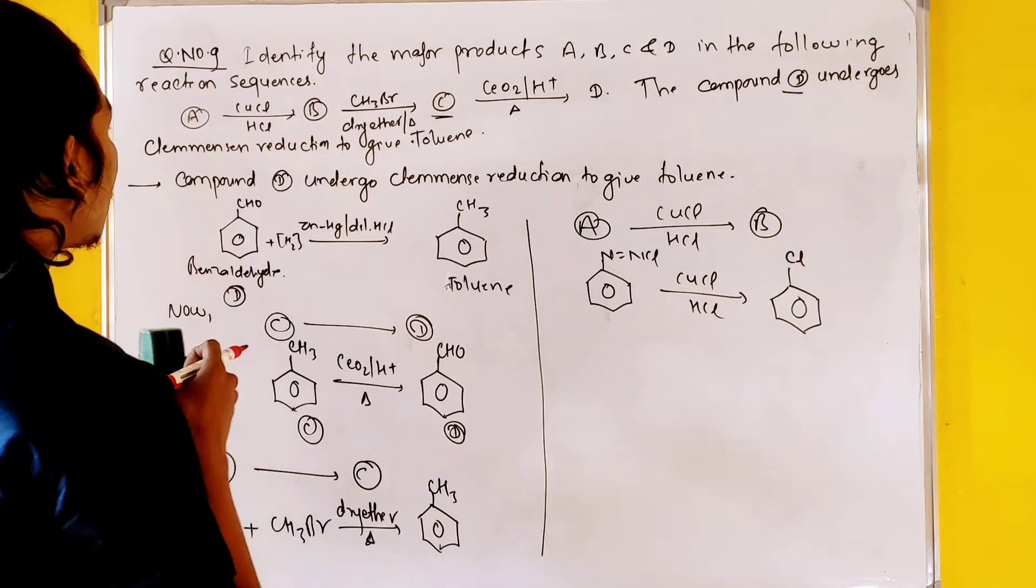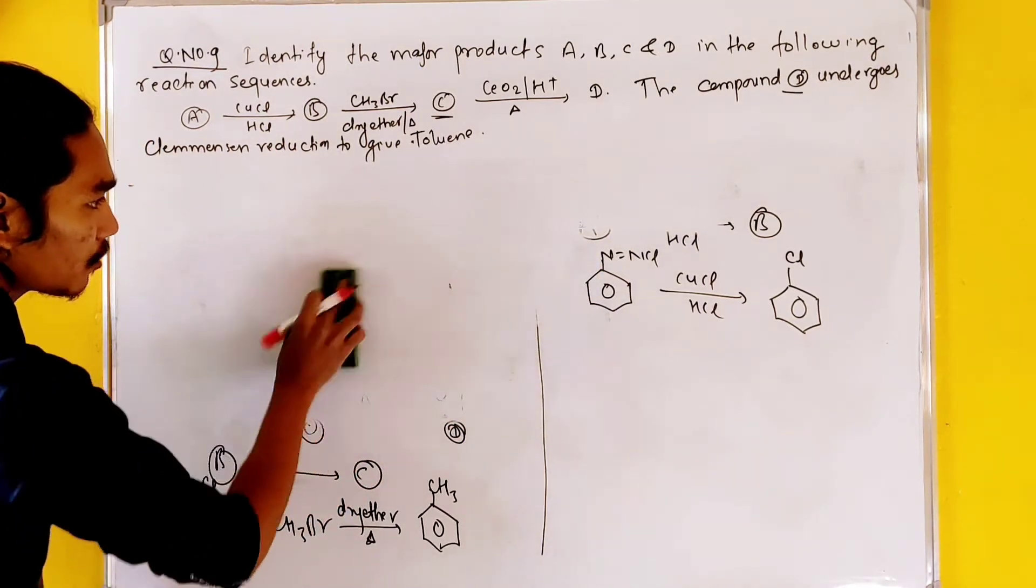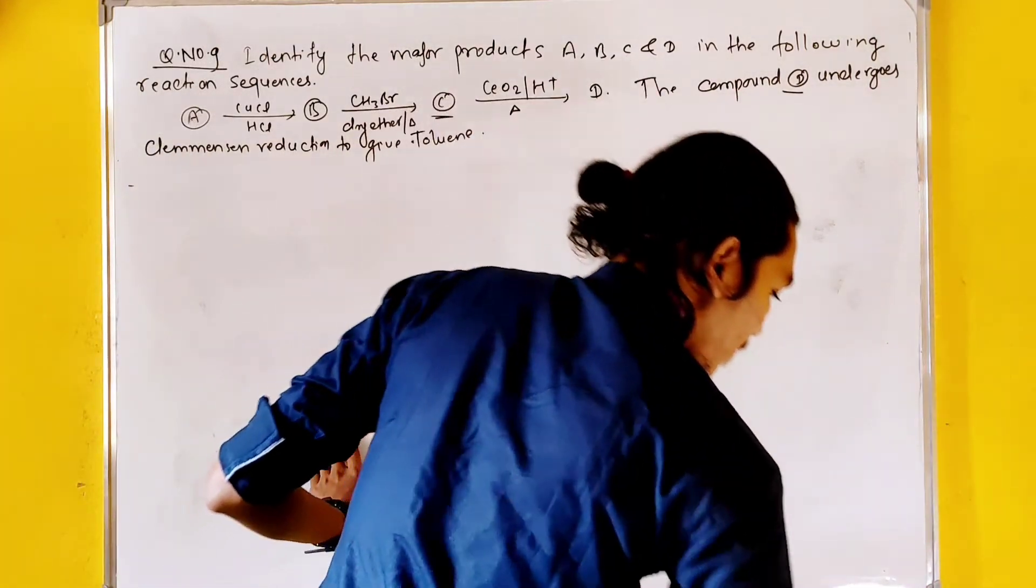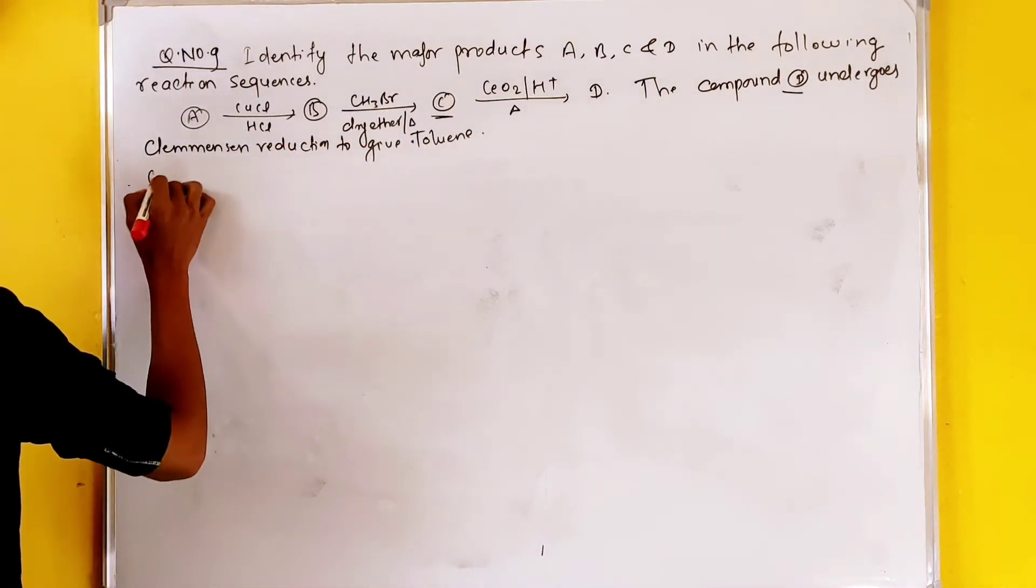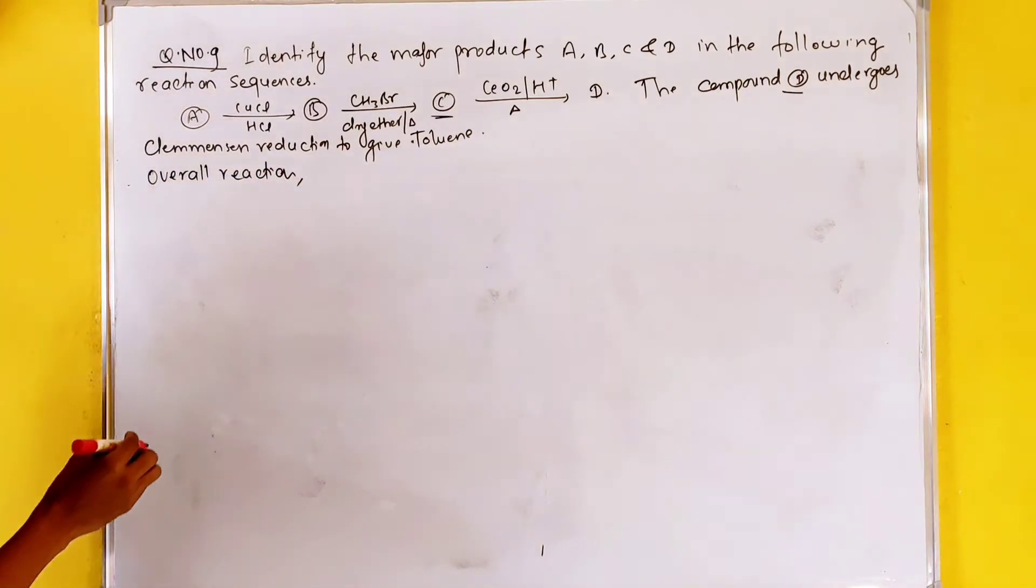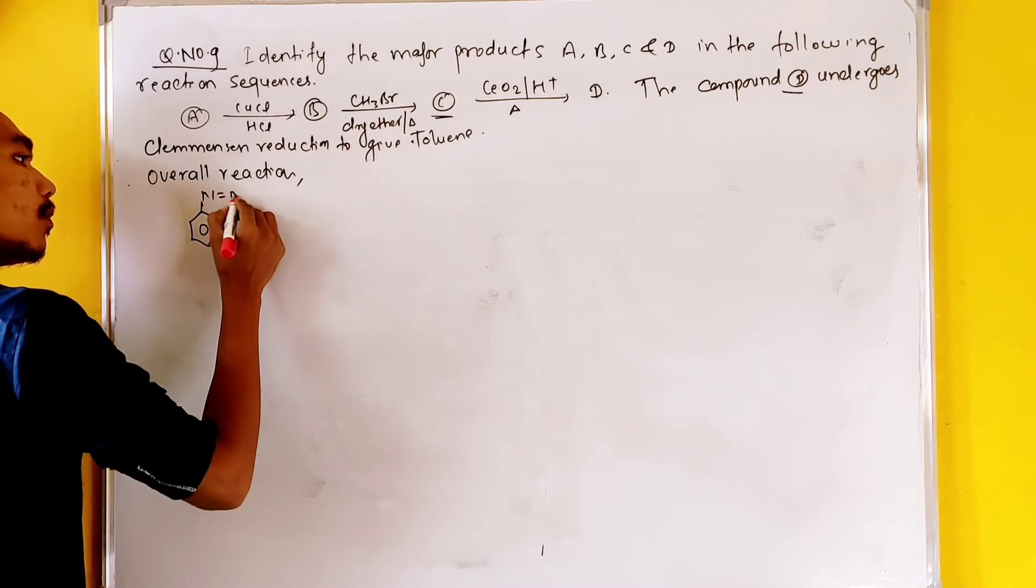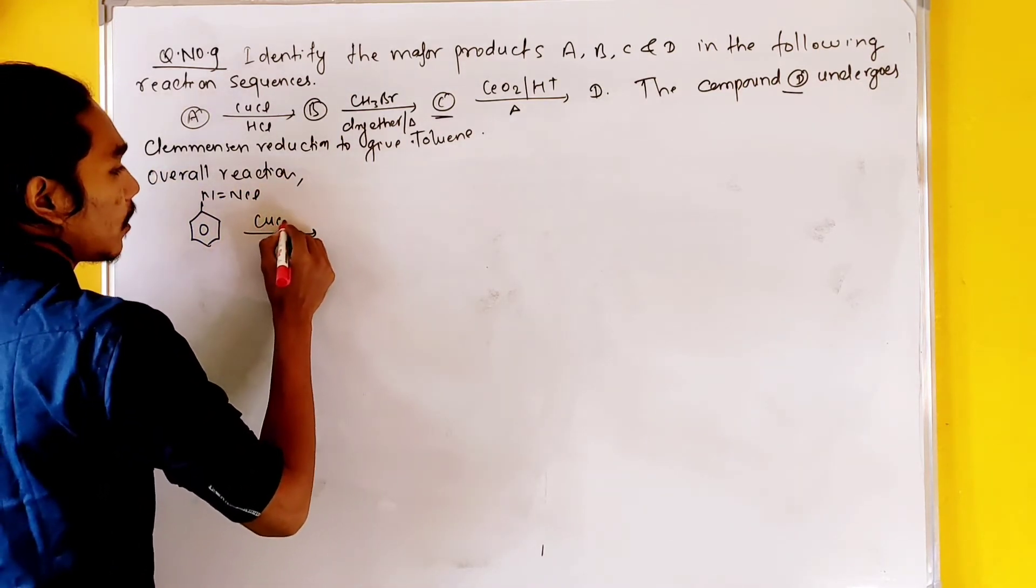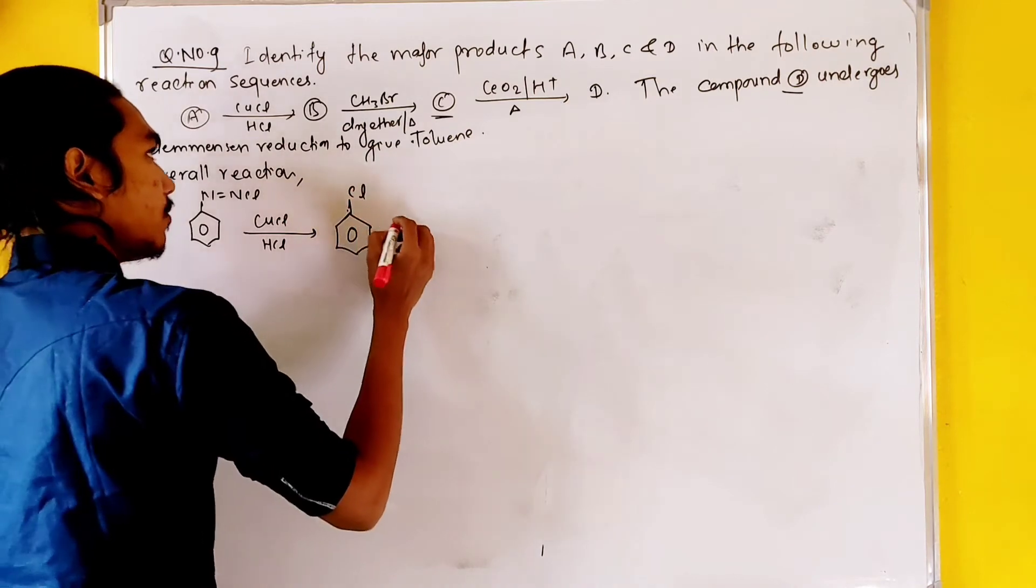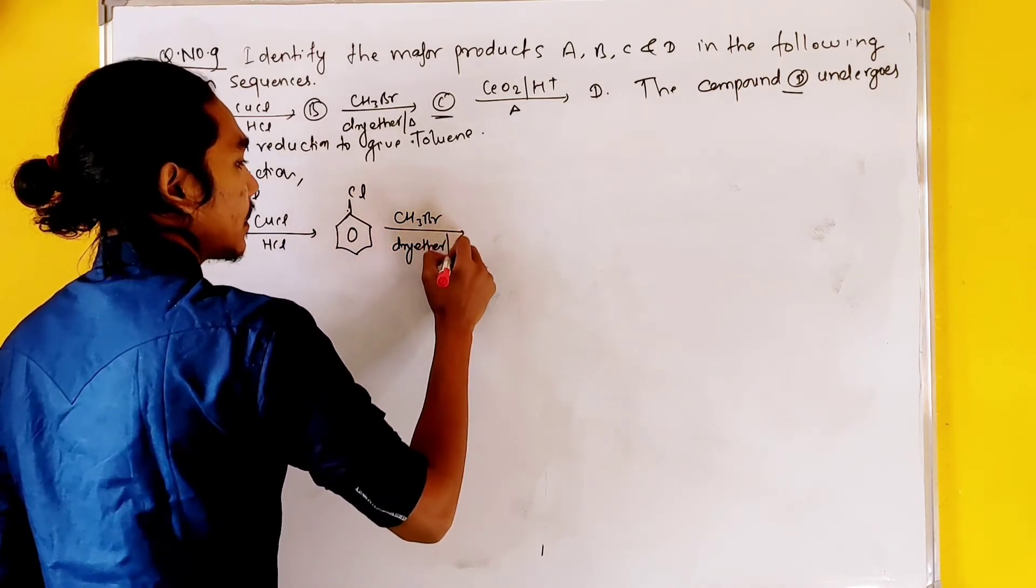What do you need to do with the overall reactions? I will tell you the overall reactions. If you have any questions, please comment. Now, what do we do with the overall reactions? The compound is benzene diazonium chloride, that means N double bond NCl, which is the copper chloride and HCl, thus we find HCl with CH3Br and dry ether.